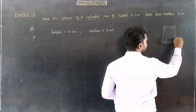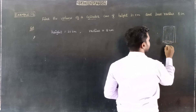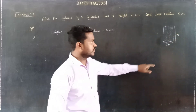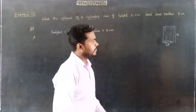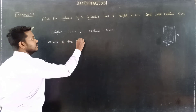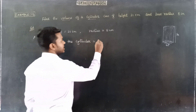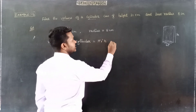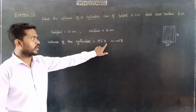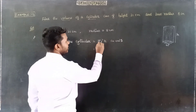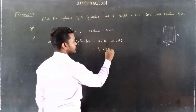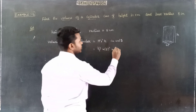The volume of the cylinder is based on the base radius and height. The base is a circle, so the formula is pi r squared. The base area is pi r squared, and we multiply by the height. So, the volume of a cylinder is equal to pi r squared into h.